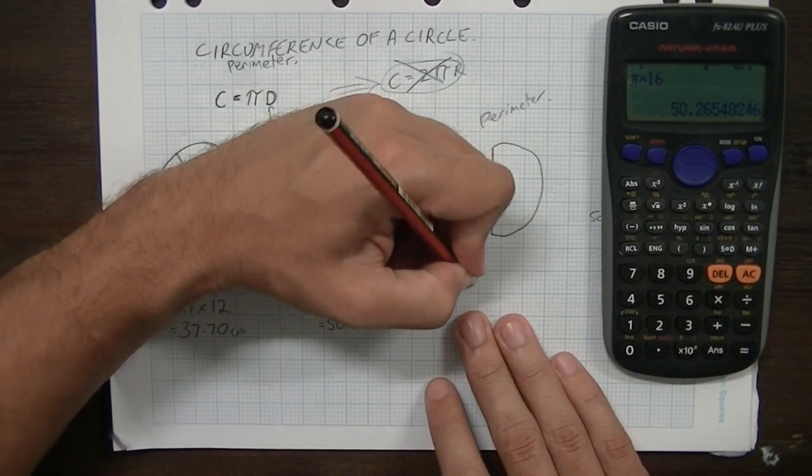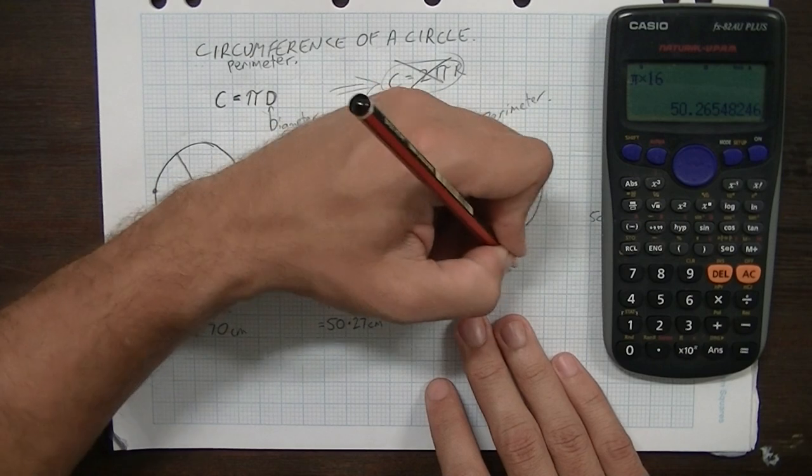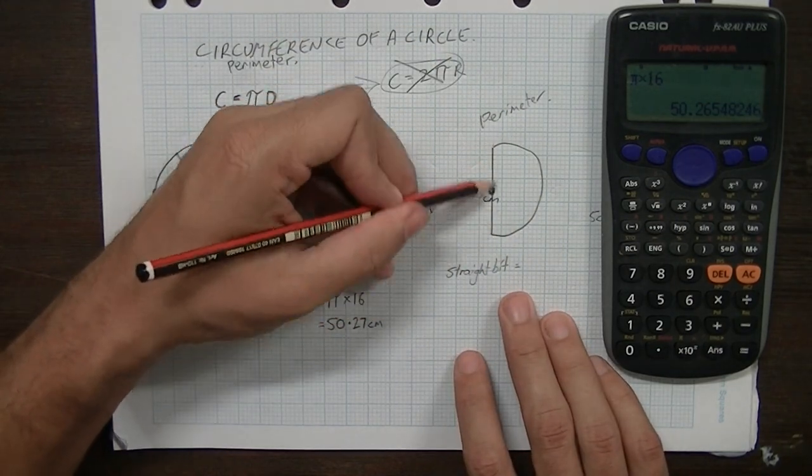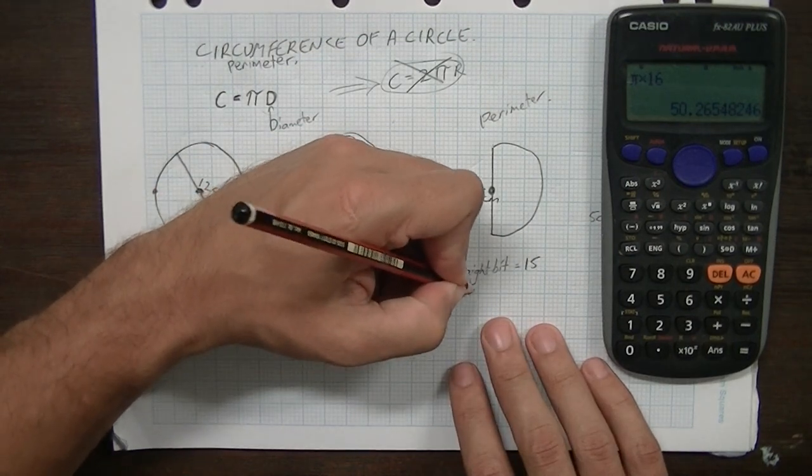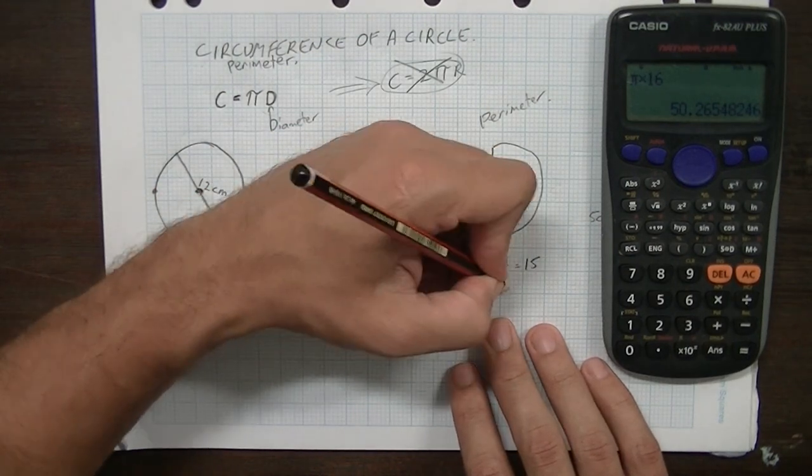The straight bit, that's really easy. Simply 15 centimetres. Now, the curvy bit, just a bit more complicated.